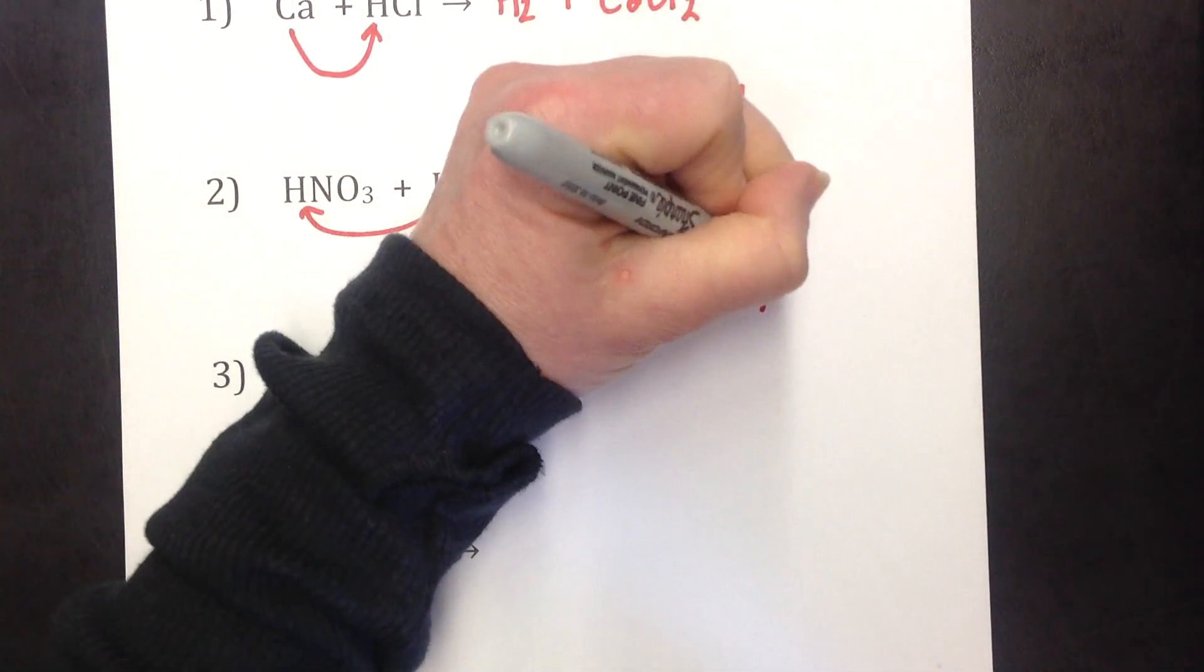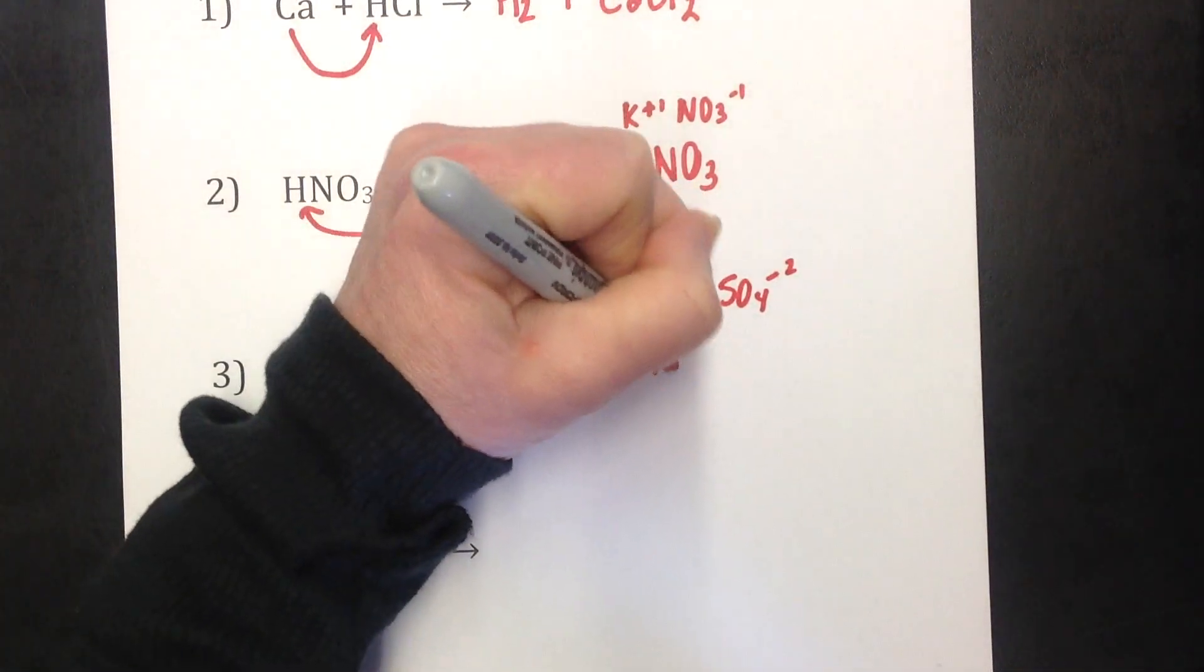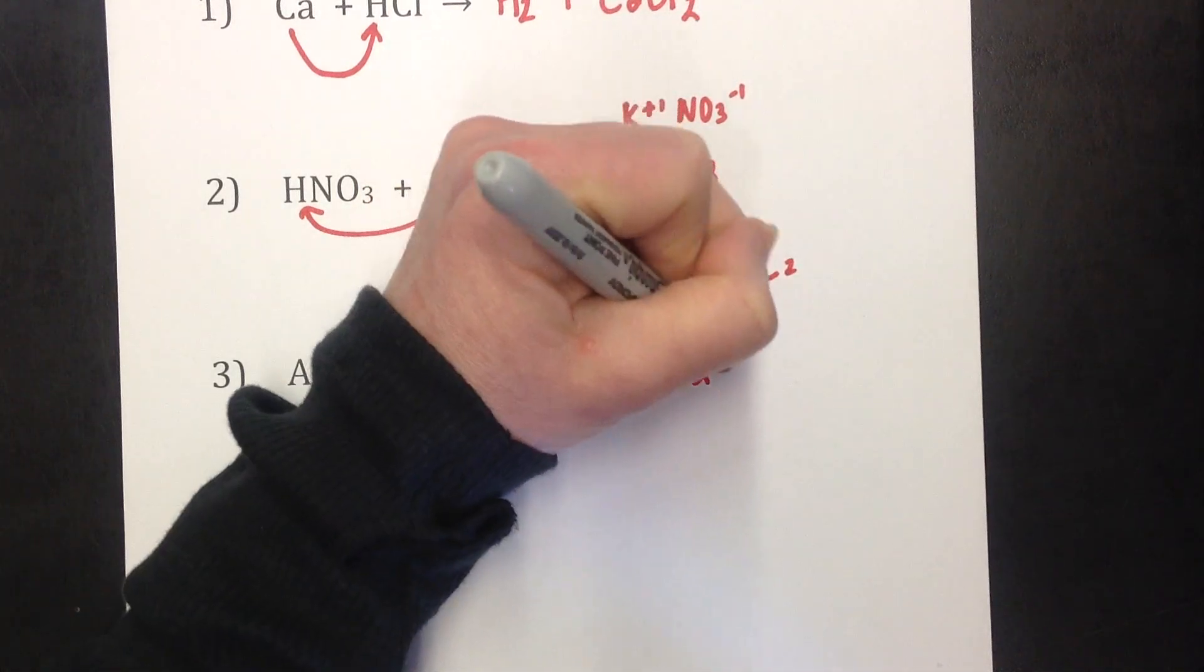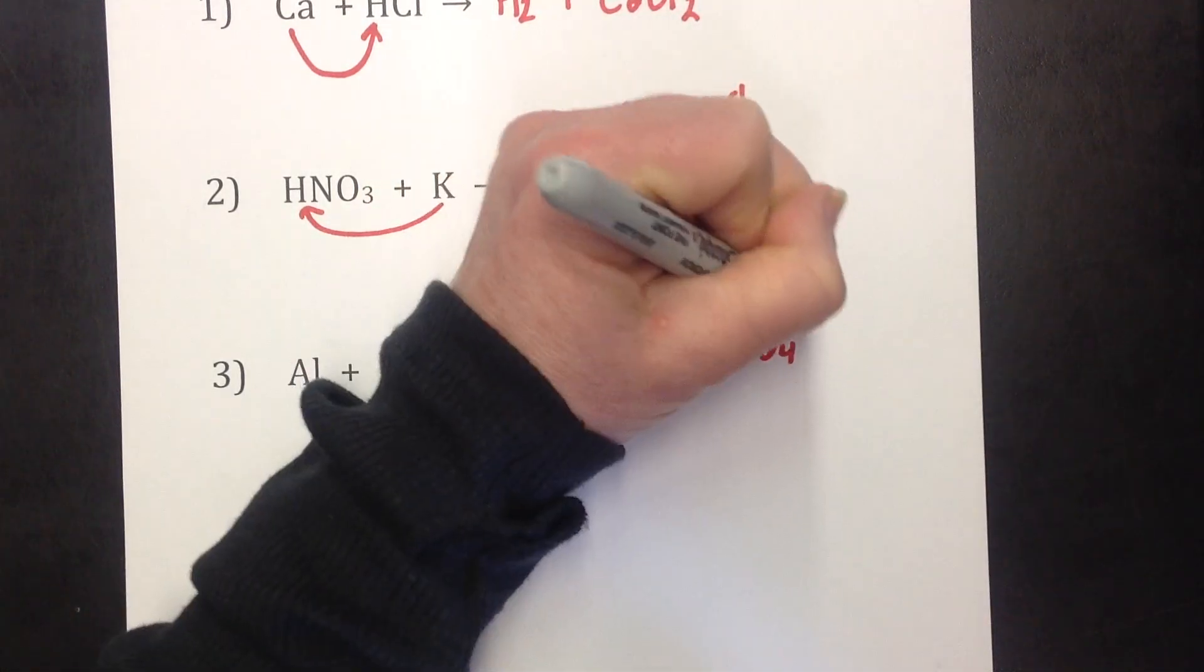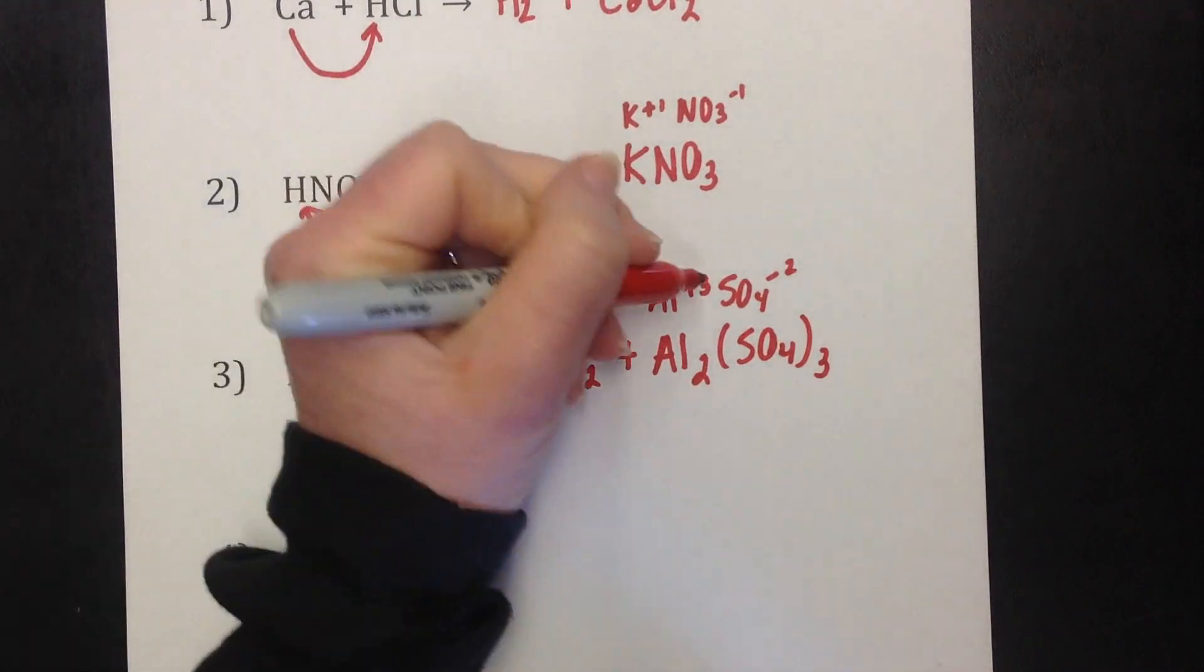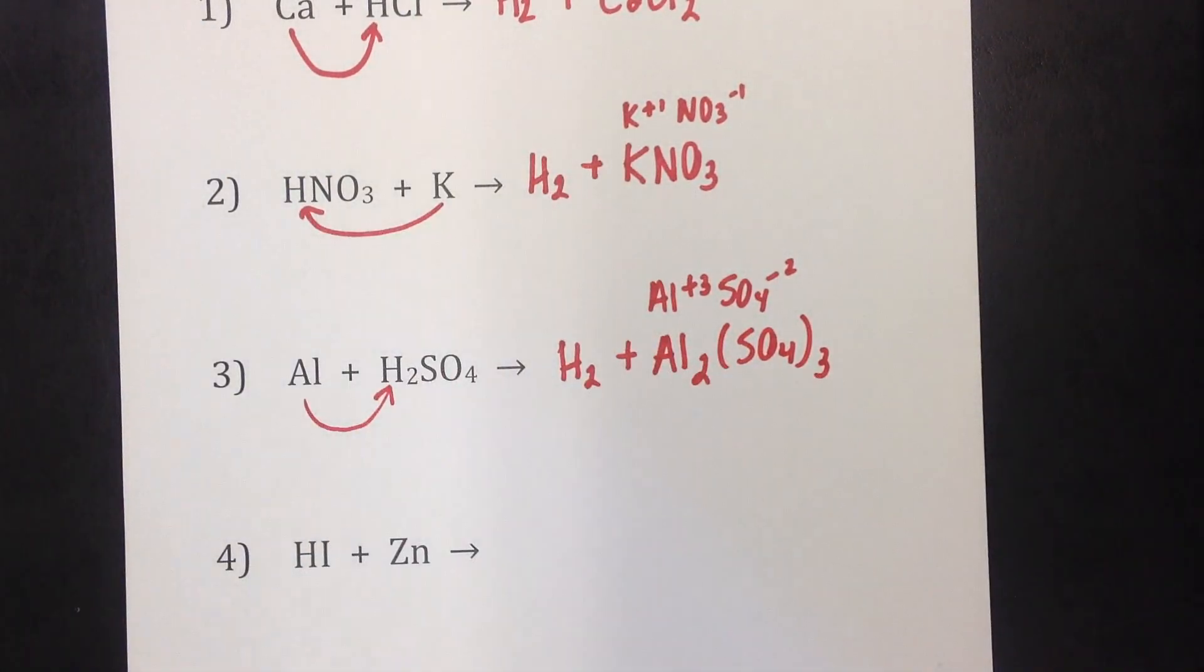Aluminum is a plus three. Sulfate is SO4 minus two. Al2 and then in parentheses SO4 three. Don't forget, when you crisscross, you got to protect that polyatomic ion with parentheses.